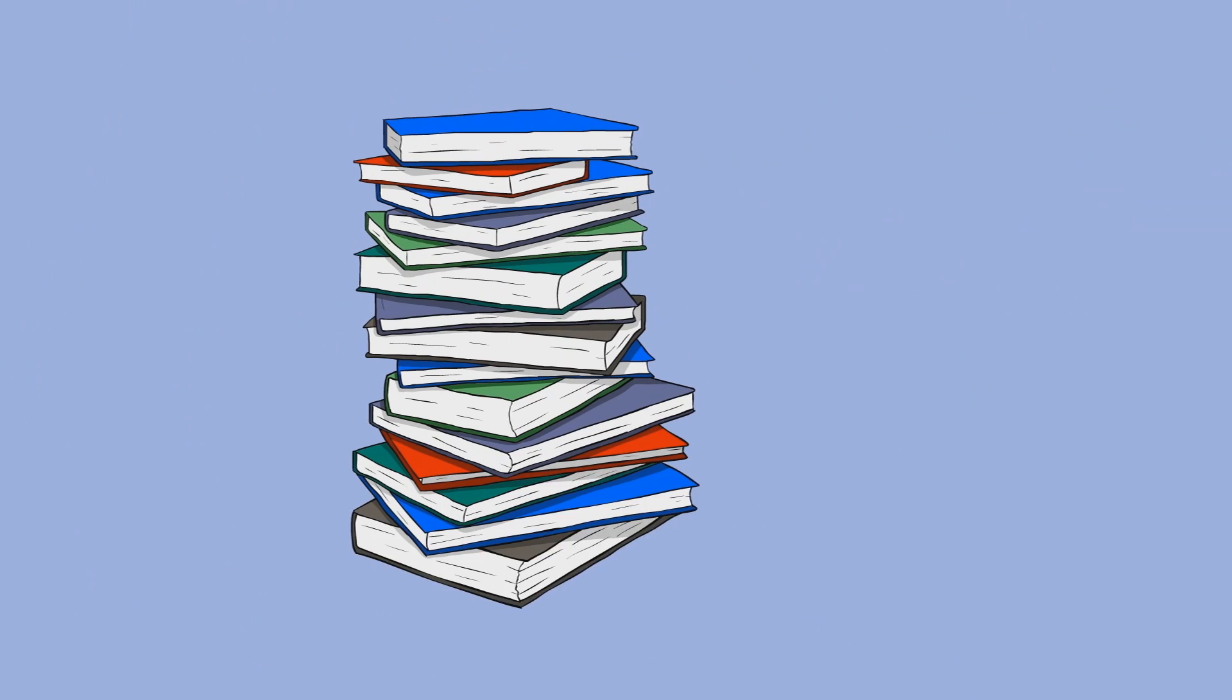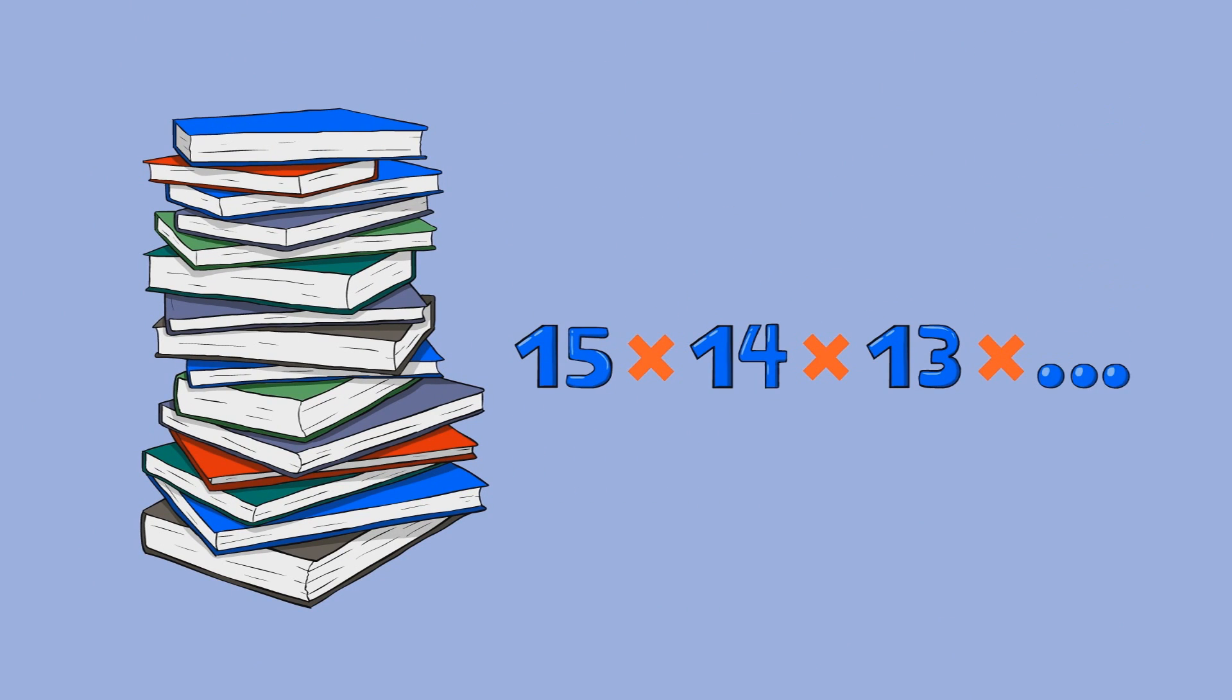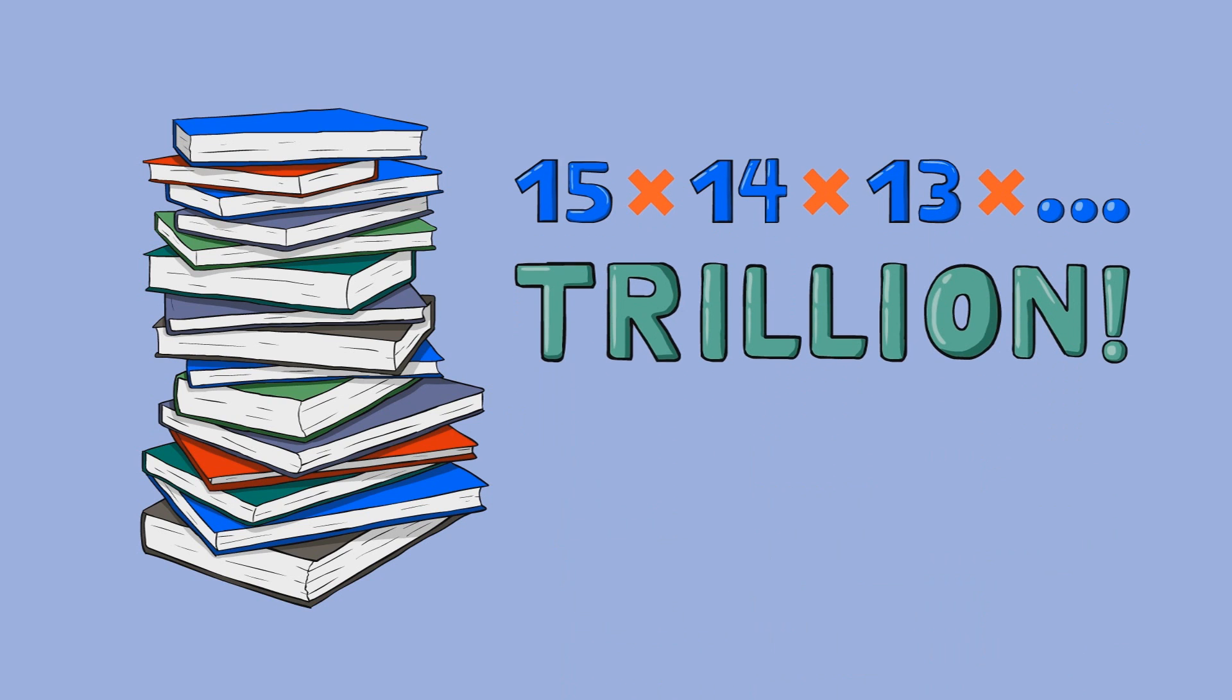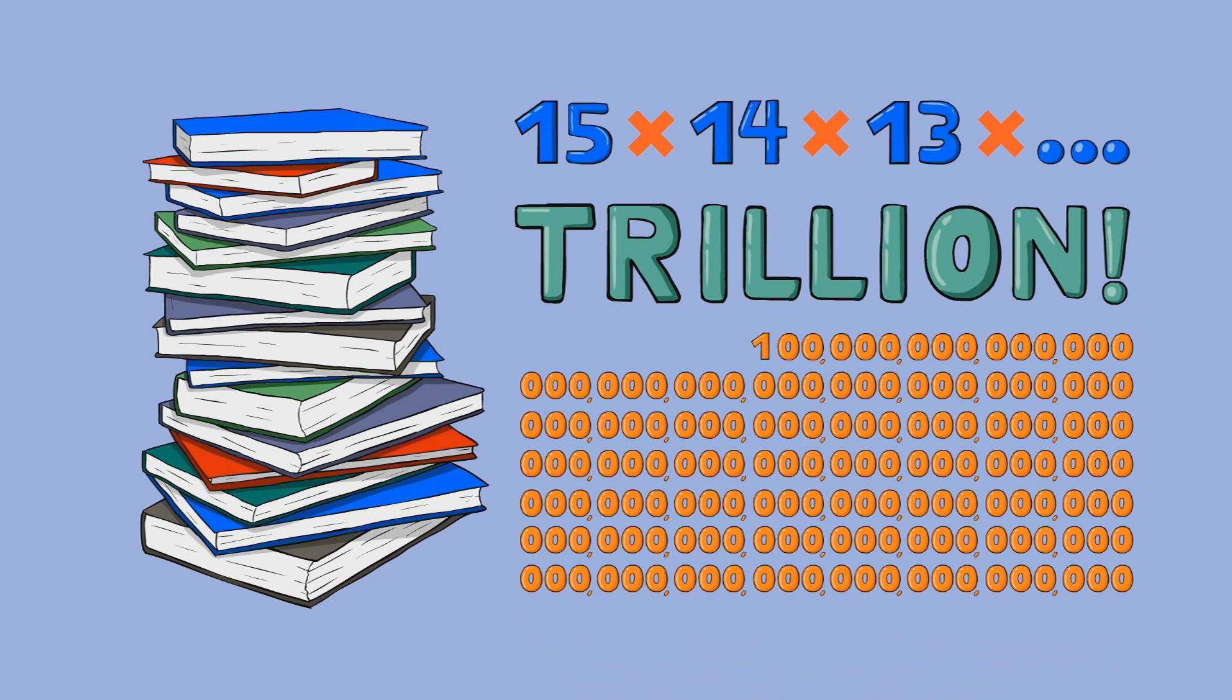For example, if you have 15 books and you get to order them in any which way you want, you multiply 15 times 14 times 13 and so on. There are over a trillion possibilities. If you have 100 books, the number is 10 to the 158th.